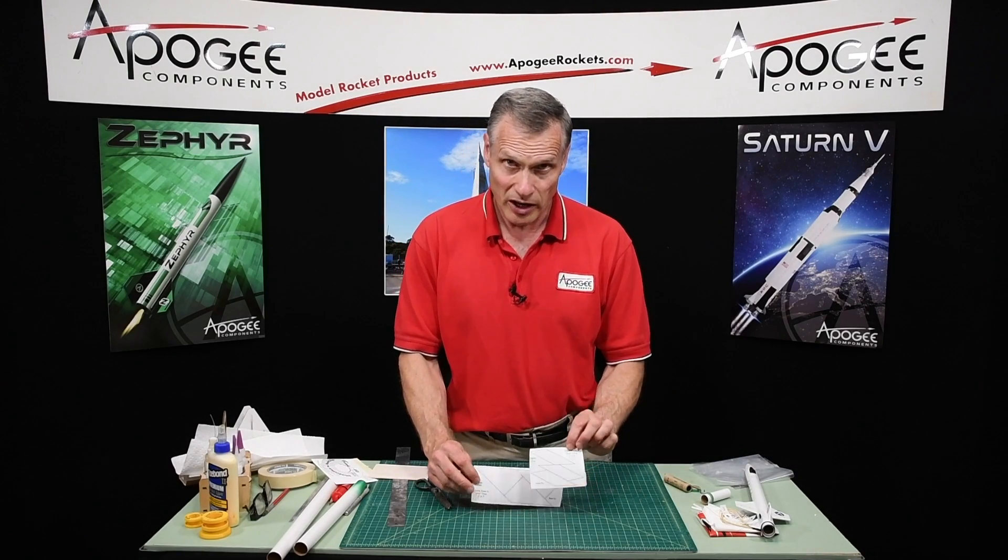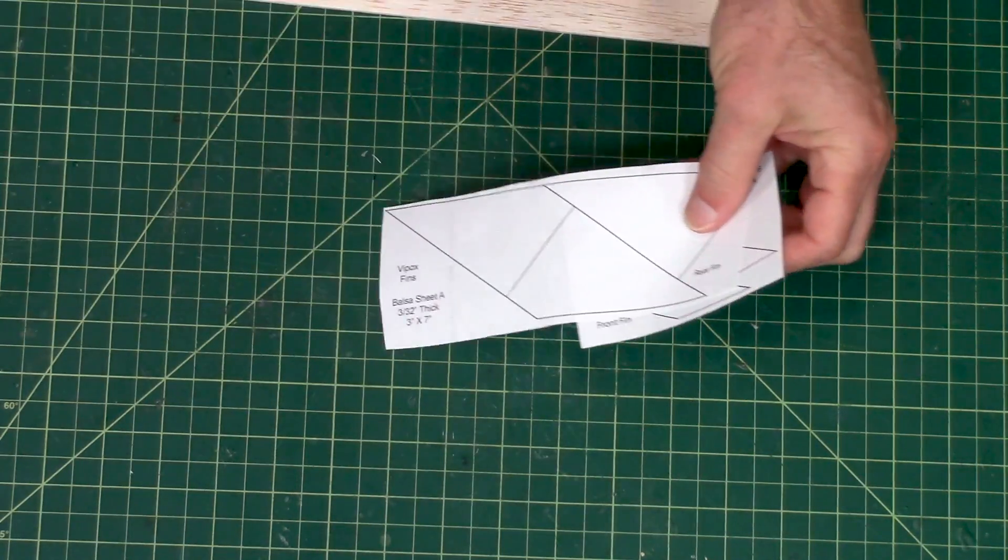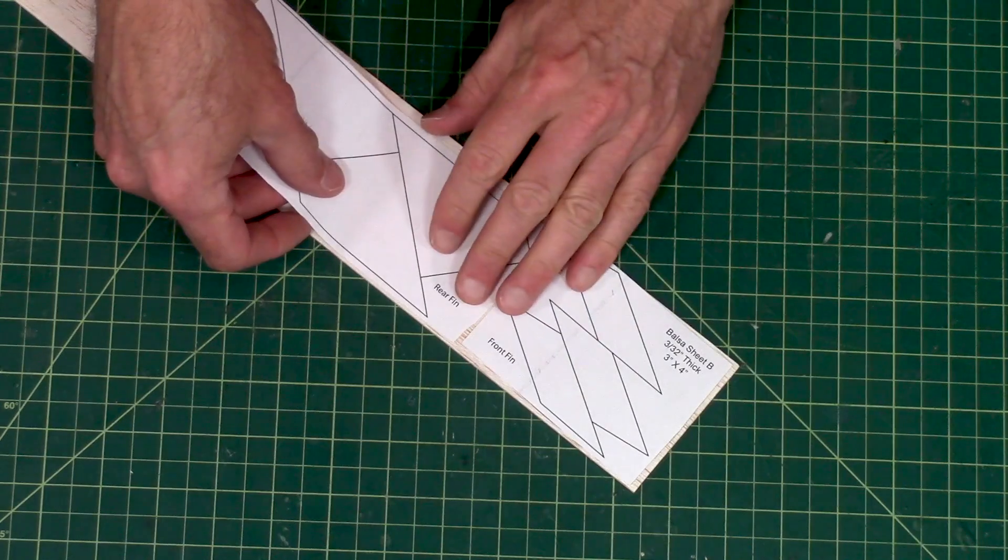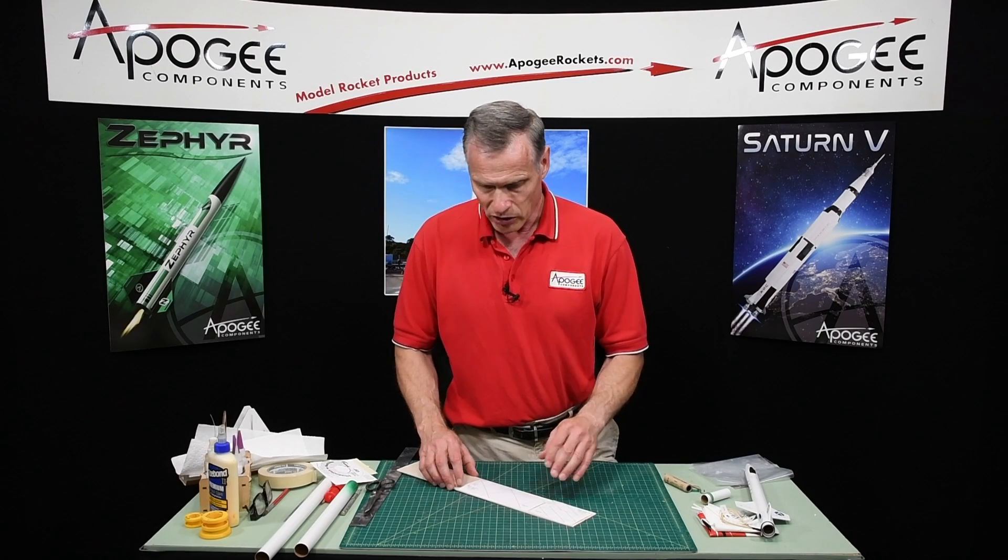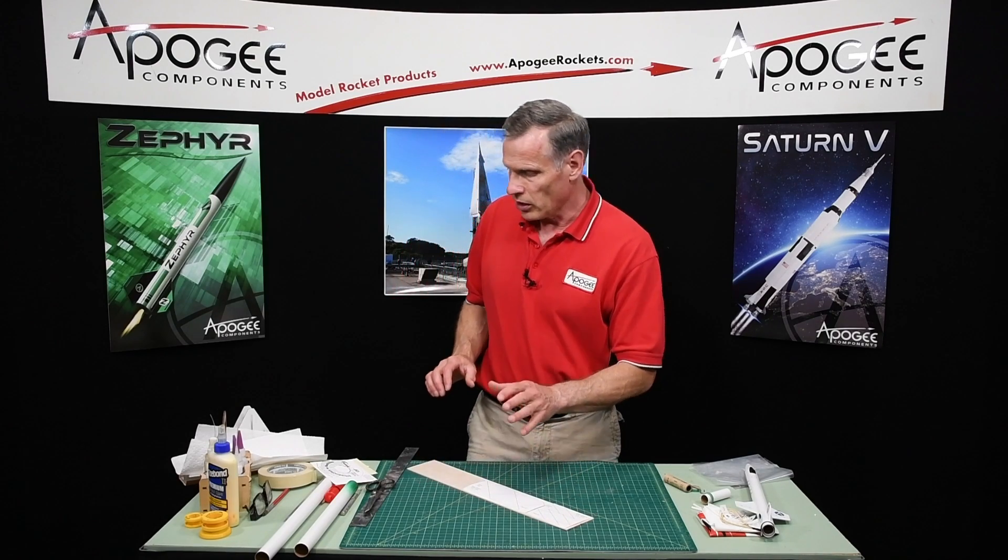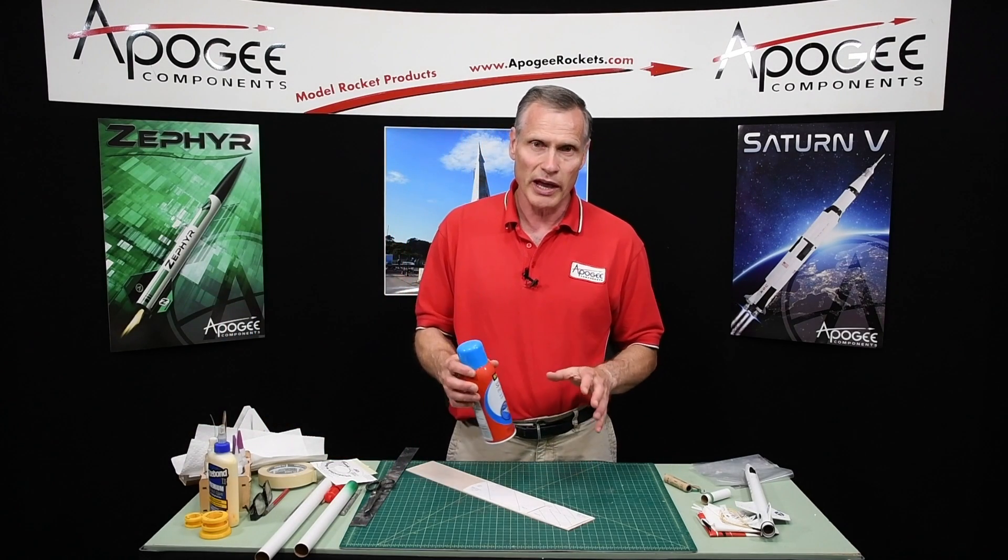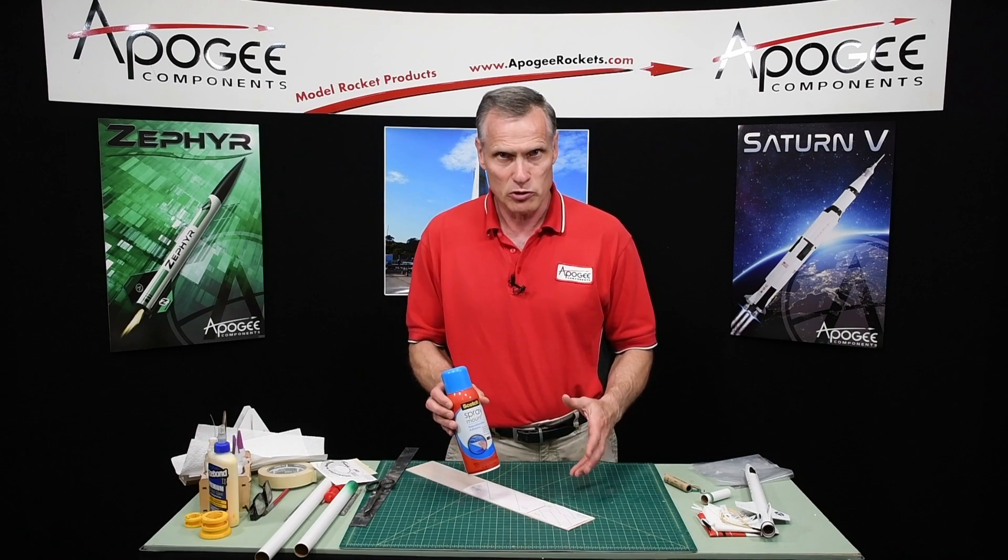Now I have my fin plants cut out and I need to transfer these to the wood so that I can cut them out. I need to attach them to the wood and then I'm going to cut right through the paper. That's the easiest way to do it and to be most accurate. To transfer them to the wood I like to use a spray adhesive. This is a low tack adhesive called spray mount. You can also get an Elmer's brand.